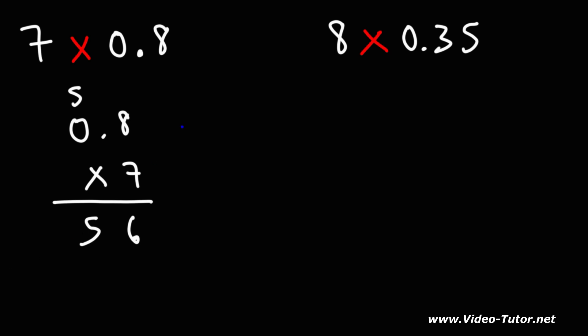Now, notice that we only have one digit to the right of the decimal point. So our answer is going to have one digit to the right of the decimal point. Therefore, the answer is going to be 5.6.